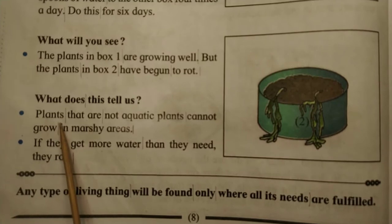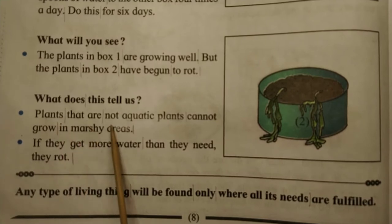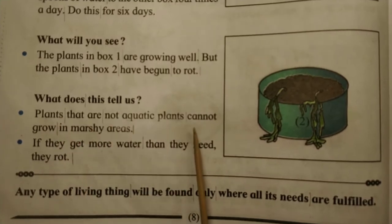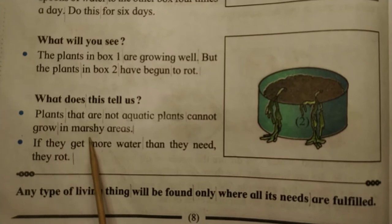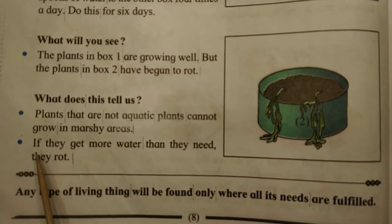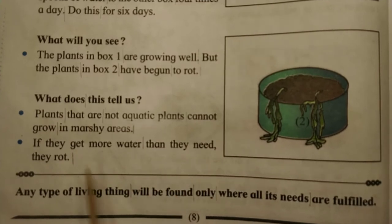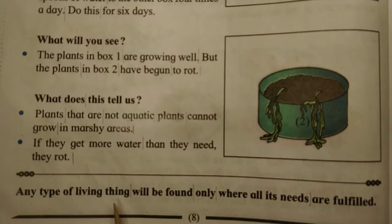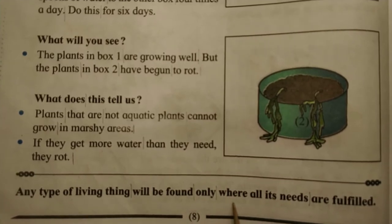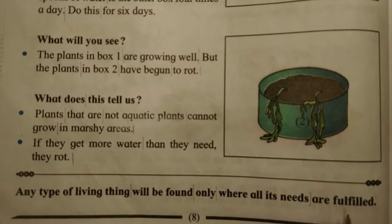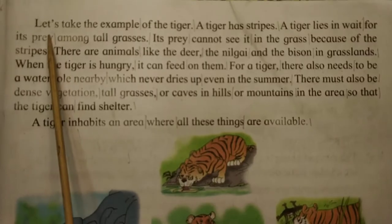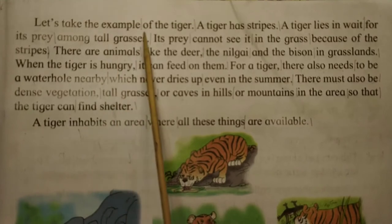Plants that are not aquatic cannot grow in marshy areas. If they get more water than they need, they rot. Any type of living thing will be found only where all its needs are fulfilled. Let's take the example of the tiger.